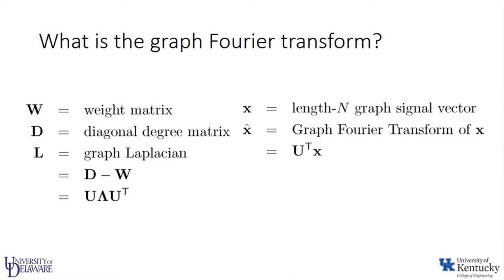Having our weight matrix, we define our diagonal degree matrix such that the i-th diagonal within D equals the sum of all weights connected to the i-th node. We then define our graph Laplacian by subtracting our weight matrix from our diagonal matrix. Applying eigenvalue decomposition, we extract a matrix of eigenvectors. We then take our original signal — a length-N signal vector — and multiply it by this matrix of eigenvectors to derive our coefficients for the graph Fourier transform.